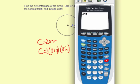2 times 3.14 times 8 equals 50.24, which rounded to the nearest tenth is 50.2.